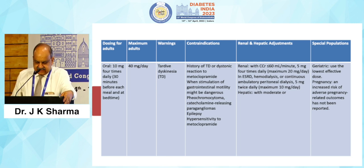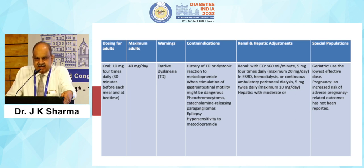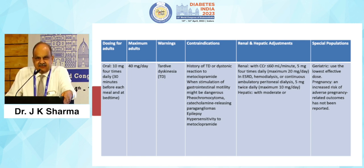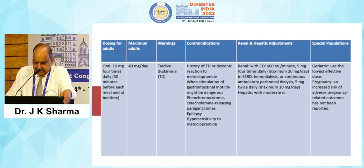A very important warning regarding metoclopramide is tardive dyskinesia — we all should have experienced this side effect with our patients at least once. There are certain contraindications: history of tardive dyskinesia or dystonic reaction to metoclopramide. Once it happens, please do not use the drug again. For special populations like the elderly, use the lowest effective dose. Pregnancy: an increase in risk of adverse pregnancy-related outcomes has not been reported.